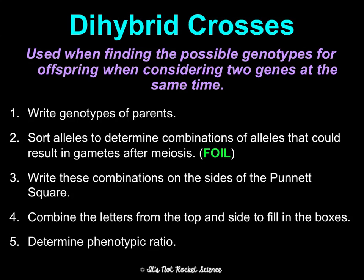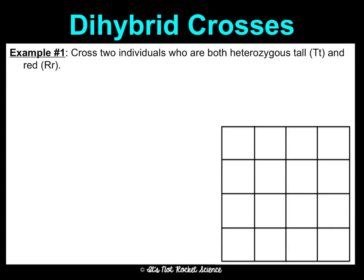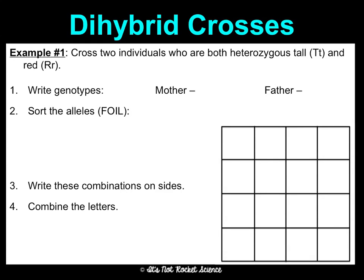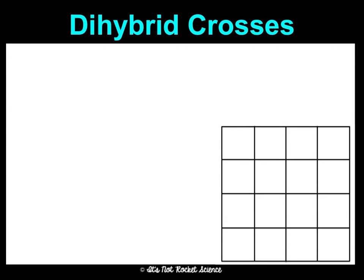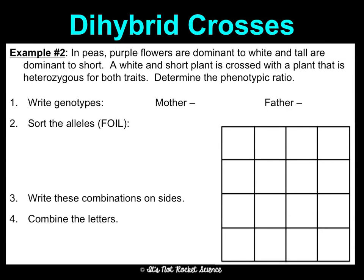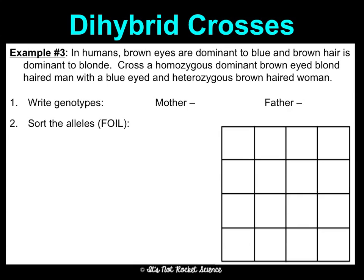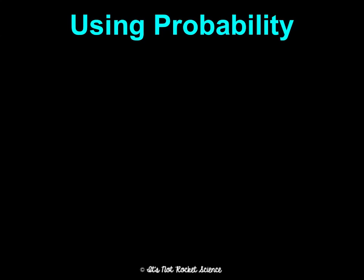Then you'll determine the phenotypic ratio — I'll never have you do a genotypic ratio on one of these. Notice how much bigger the Punnett square has to be. There are some practice problems, but again, I want you to come into tutoring and get help to make sure you're doing it correctly. You have three examples for monohybrid and three for dihybrid. The last thing for you honors students is using the rules of probability to figure out genotypic ratios.